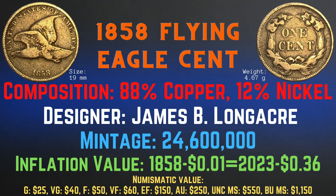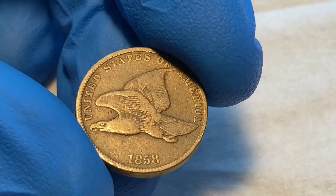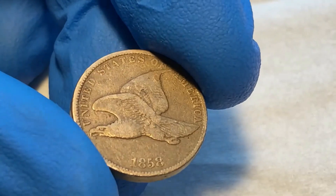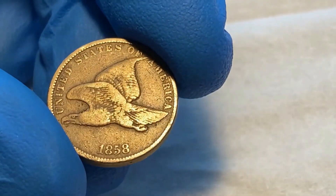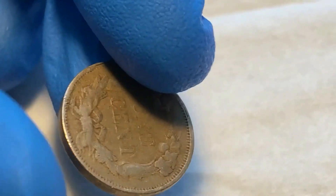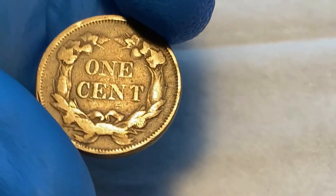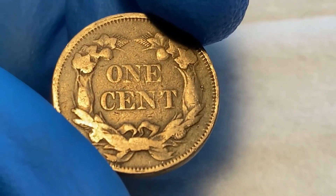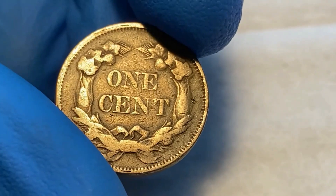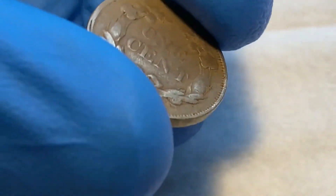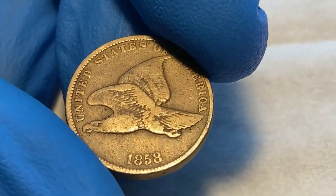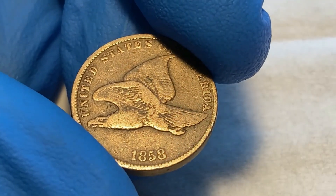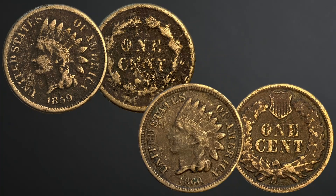Now let's take a closer look at the 1858 Flying Eagle cent from my collection. This coin has some luster and wear on the high spots, but all the details are still clear. It appears to be in better shape than the previous 1857. If I were to grade this, I would grade it in very fine condition.